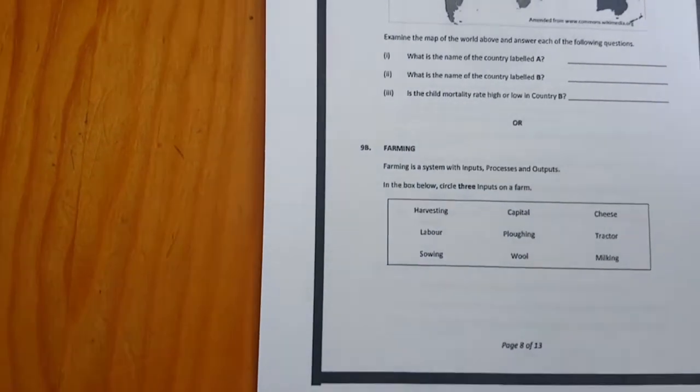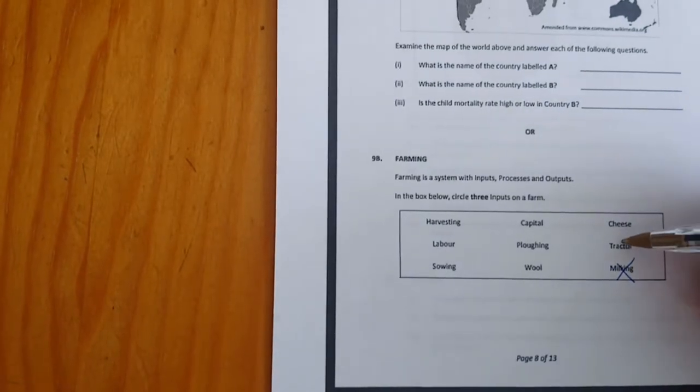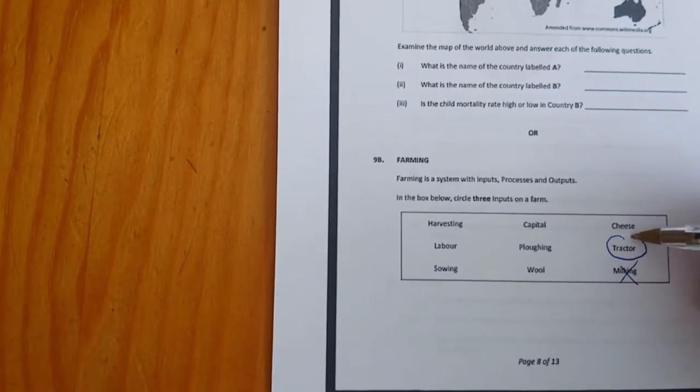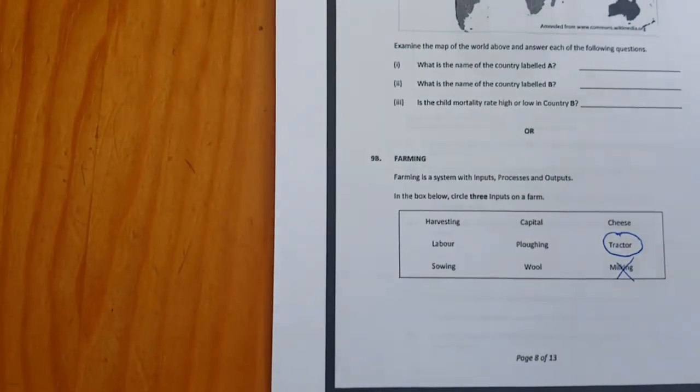So milking would be a process, so it's not that. A tractor would be the input, and then whatever the tractor does is a process, and whatever it produces is the output.